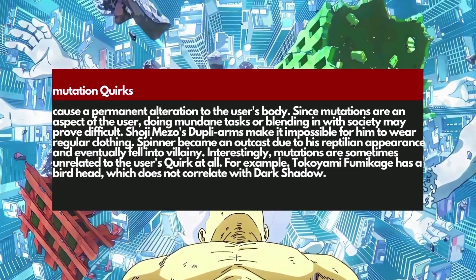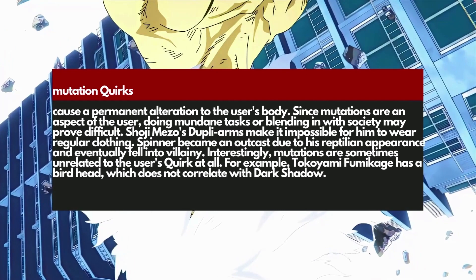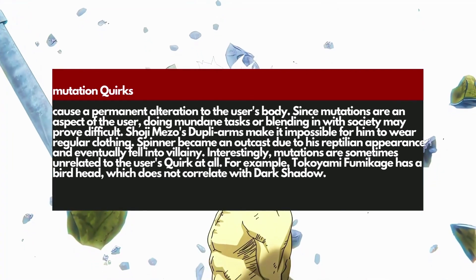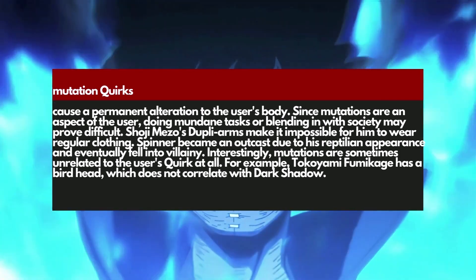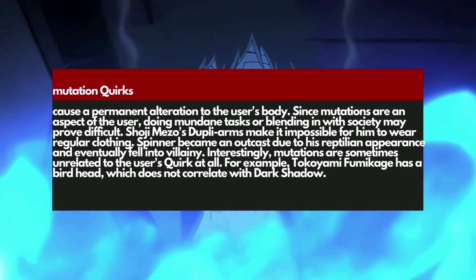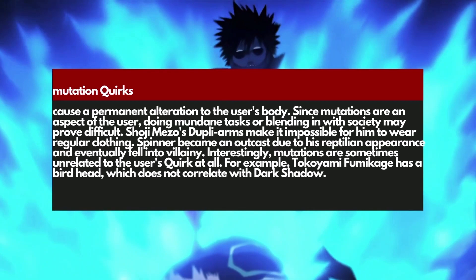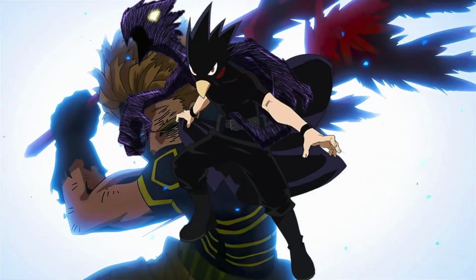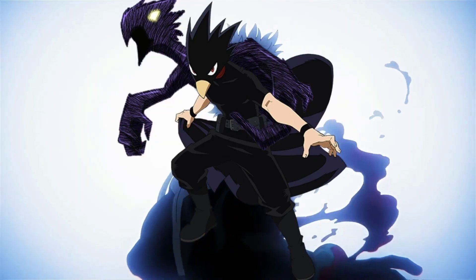Unlike Emitter and Transformation quirks, the Mutation quirk is permanent. Whatever the quirk is, it is permanent on your body — you can't change it. It's not temporary like Hardening. For instance, you can grow a tail and that's permanently part of your body, or you can be invisible and nobody can find you — you can't turn it off.